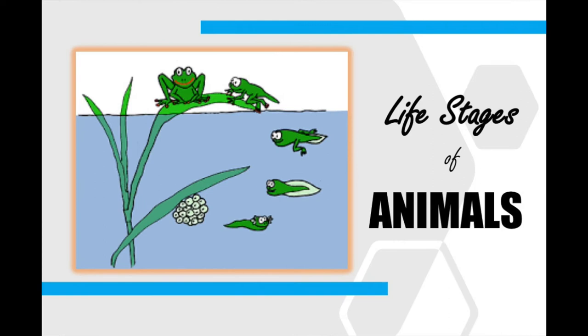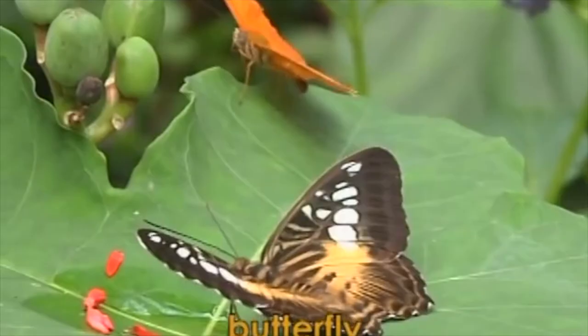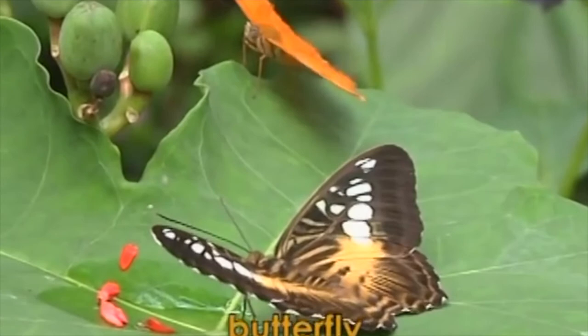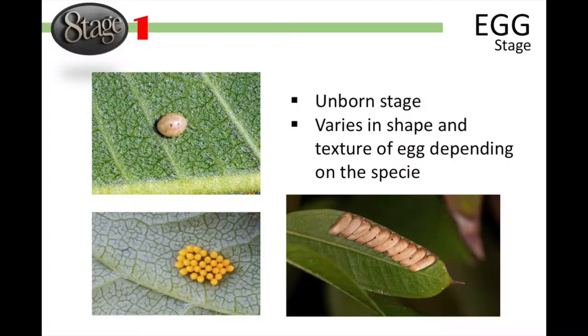Ready for the lowdown on one of the life stages of insects? It all starts when a female insect lays her eggs, usually on leaves or stems of plants. Depending on the species, eggs can vary in shapes and texture — they can be round, oval, or cylindrical, smooth, bumpy, or wrinkled. The time it takes for the egg to hatch can also vary; in some species they will hatch within a few weeks, and in others they will only hatch once the weather is warm enough.